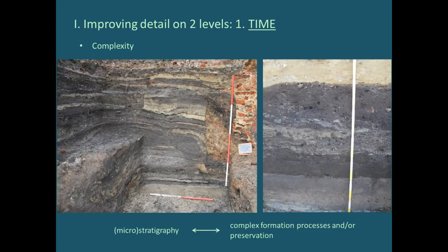Looking at the first larger theme — improving the detail of phases — I'd like to show how we can do this on the level of time. Early medieval towns, and towns in general in the archaeological record, present excavators with two big problems in stratigraphy. The first is the complexity of microstratigraphy: if you have very thinly laminated deposits, it's very difficult to relate artifacts and dating to these deposits, and very difficult to excavate them in plan. This is one place where micromorphology can really improve our image.